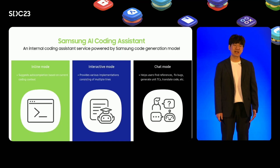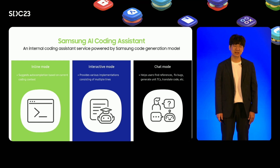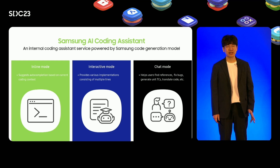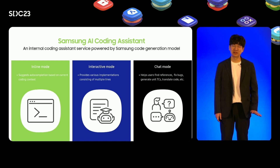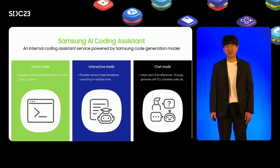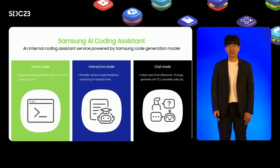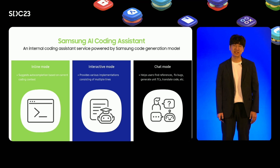Currently, we are actively developing an internal coding assistant tool using our code generation model. Our AI coding assistant tool offers three primary operating modes. First, the inline mode provides auto-completions based on the current code context. The second mode, interactive mode, offers more comprehensive implementation suggestions spanning multiple lines. Lastly, the chat mode enables code writing, debugging, test case generation, and code translation through a conversational interface.